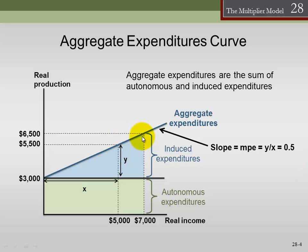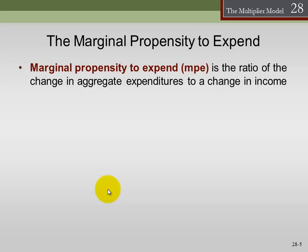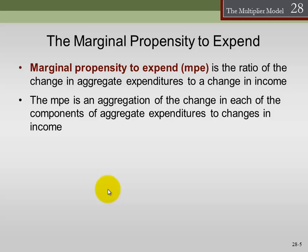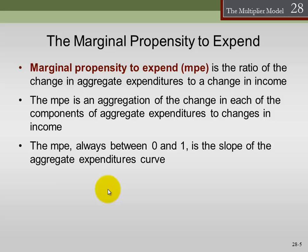The slope of this aggregate expenditure line is called the marginal propensity to expend, or the marginal propensity of expenditure. In other words, it is the additional expenditure we will have if we have one more dollar of income. More carefully defined, the marginal propensity to expend is the ratio of the change in aggregate expenditure to the change in aggregate income. The marginal propensity to expend always has to be between 0 and 1 — we can't spend more than our income and we can't save more than our income.